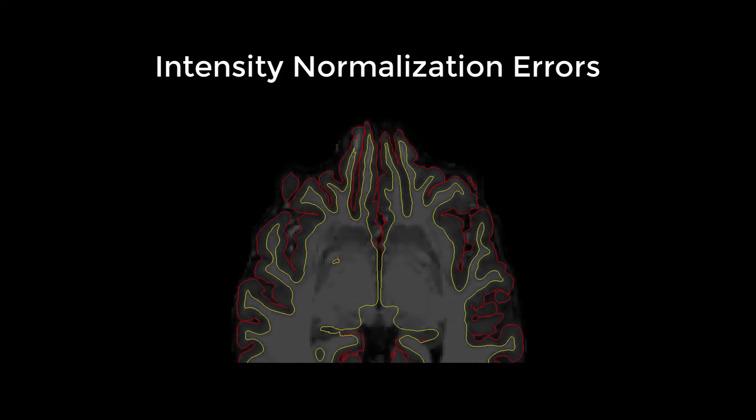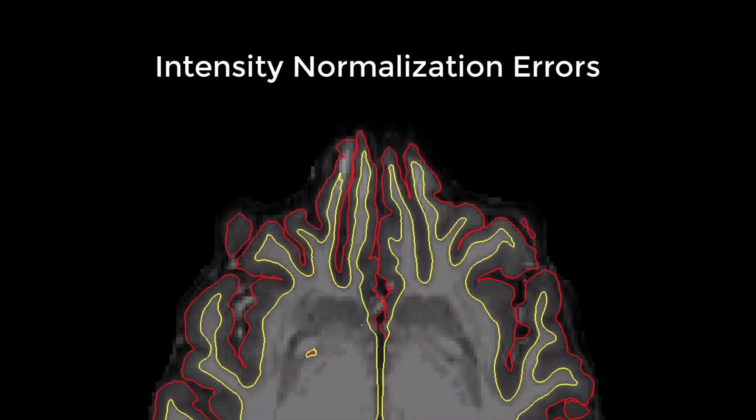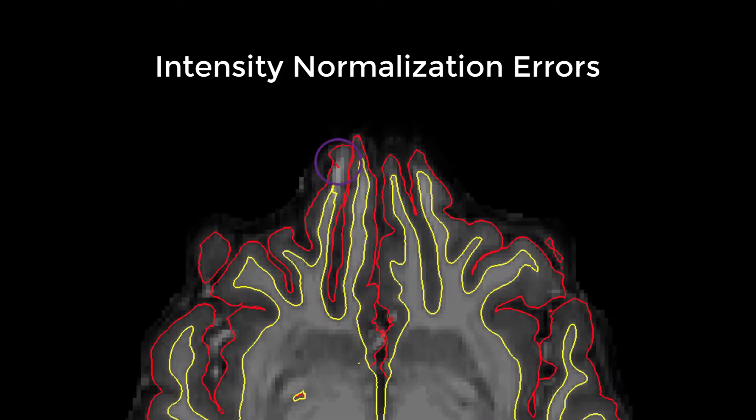Another common class of errors are intensity normalization errors. Usually in this case, white matter is incorrectly labeled as gray matter. This happens most frequently in the ventral temporal lobes and the orbital frontal areas.